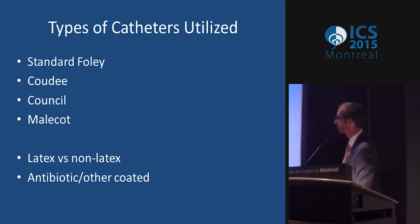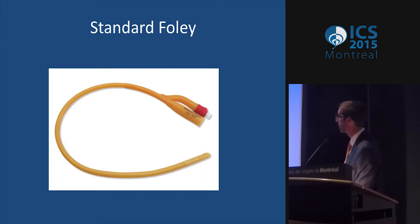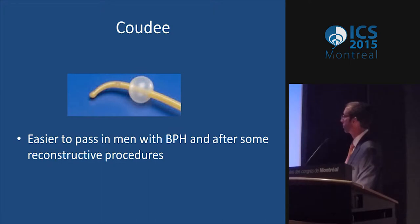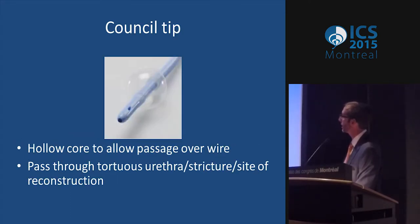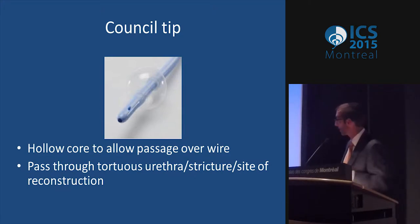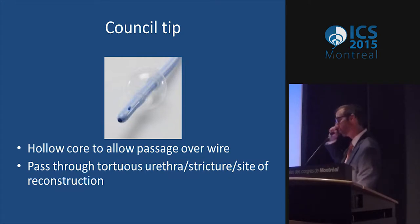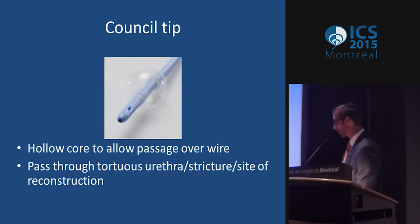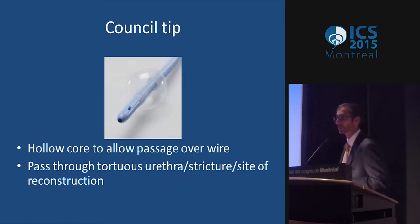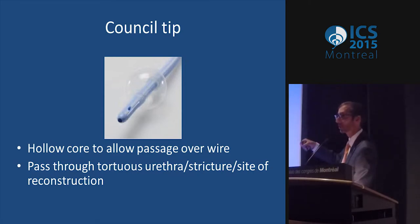We're all very familiar with the standard Foley — works great in your average patient. Typically in older males we defer to a coude catheter because it has a little curve that makes it easier to get into the bladder without causing trauma. If a patient has urethral stricture disease or if it was very difficult getting a catheter in, we may use a council tip catheter, which has a little hole at the end. You can pass a wire through a scope, pull the scope out, and guide the catheter over the wire.